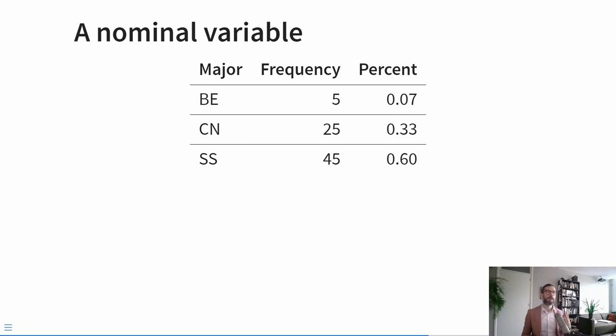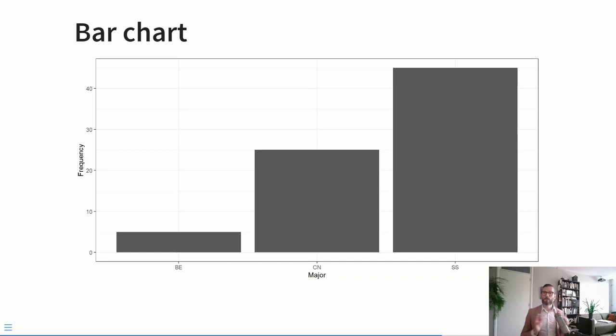Depending on the measurement level of your variable, you can use different statistics to describe it. For example, consider this nominal variable: the proportion of students within each of the three major tracks of liberal arts and sciences. Five students take business and economics, twenty-five take cognitive neuroscience, and forty-five take social sciences. I could represent this as a frequency distribution — the number of people in each category — or as a percentage distribution by dividing the frequency by the total number of students. I can also visualize this as a bar chart, where the different groups are on the x-axis and the count or proportion is on the y-axis. The bars do not touch, visually signaling that this is a nominal variable.